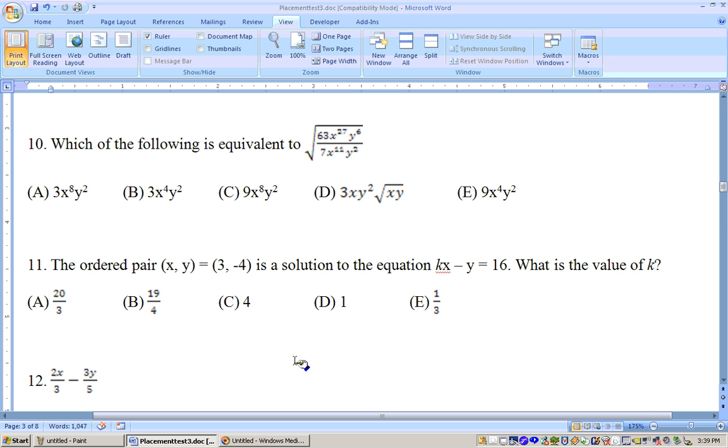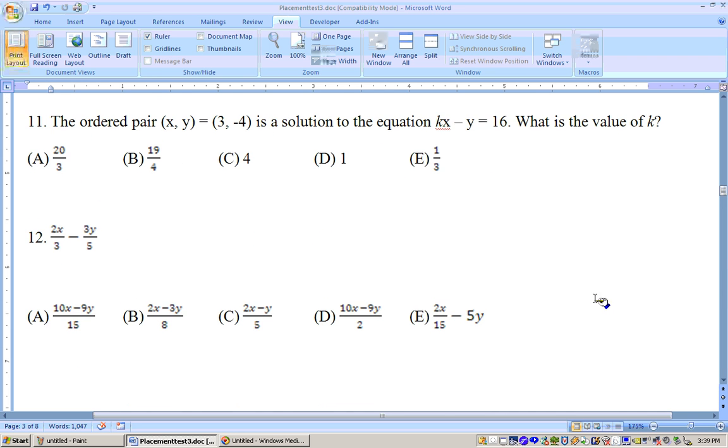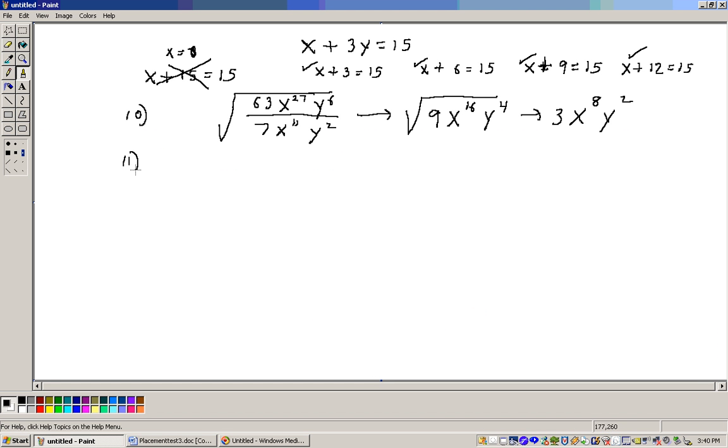Now problem 11 says the ordered pair x, y, which is the point 3, negative 4, is the solution to this equation, kx minus y equals 16. What is the value of k? So let's go ahead and do this. It says the point that we're given on problem 11 here is the point 3, negative 4.